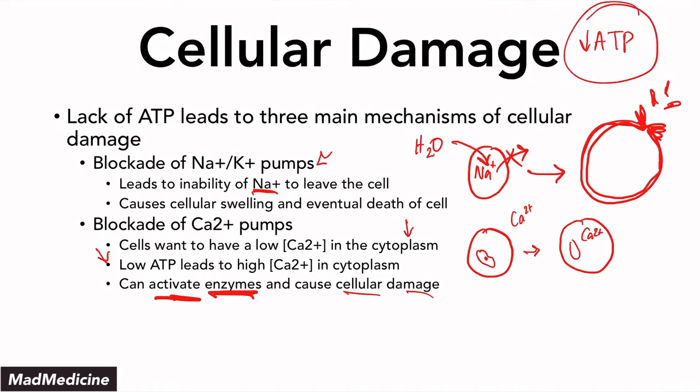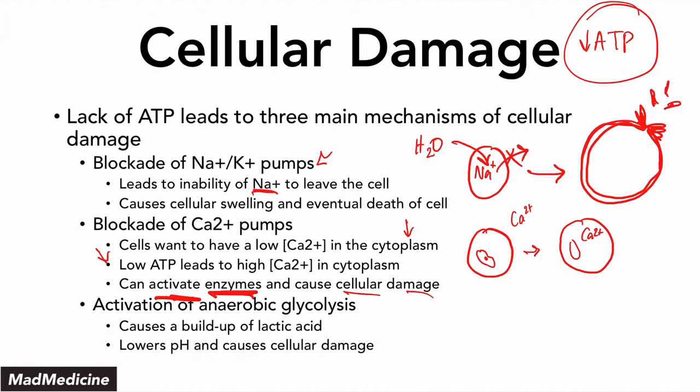Finally, when you have low ATP, you can't go through aerobic glycolysis — you are going to activate anaerobic glycolysis. This is going to build up lactic acid, and essentially this is going to lower the pH, making it more acidic. A lower or more acidic pH is going to cause cellular damage as well, because it can cause the cell wall to denature, cause abnormalities with potassium, and much more. Anaerobic glycolysis lowers the pH because of lactic acid buildup, and thus you are going to damage the cell.